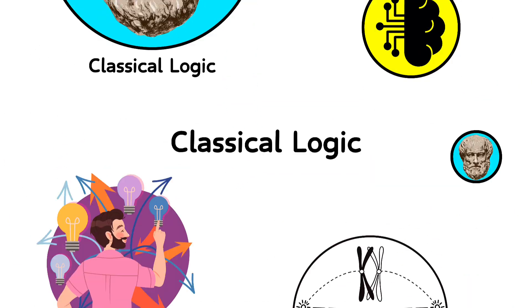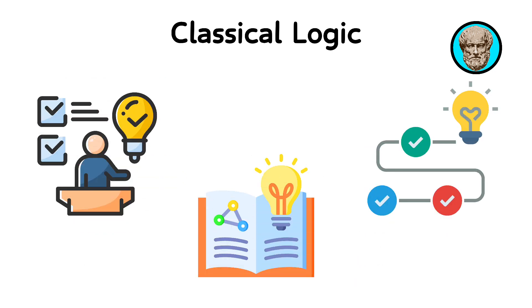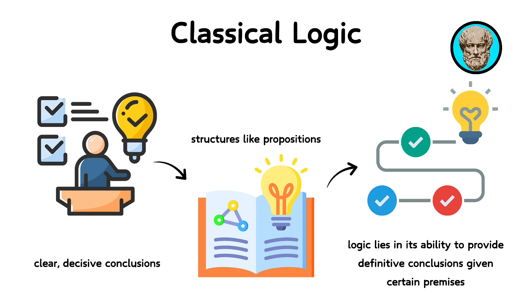Classical logic is the foundation of many other types of logic. It operates on the principle that every statement is either true or false, known as the law of bivalence. This binary approach simplifies reasoning into clear, decisive conclusions. In classical logic, we use structures like propositions, statements that declare something, and connectives, like and, or, not, to form arguments.